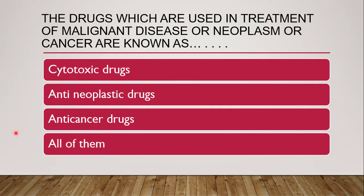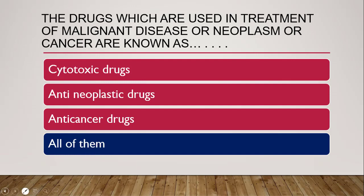Next question: drugs used in treatment of malignant disease, neoplasm, or cancer are known as — cytotoxic drugs, anti-neoplastic drugs, anti-cancer drugs, or all of them? The correct answer is all of them. They are cytotoxic since they kill cancerous cells, anti-neoplastic since they work on neoplasm, and anti-cancer since they work on cancer.